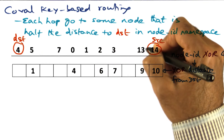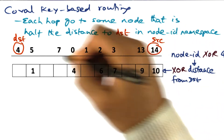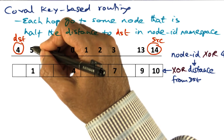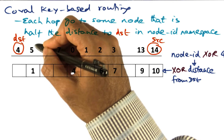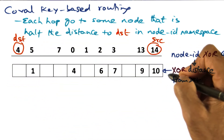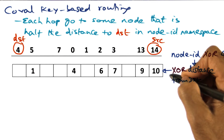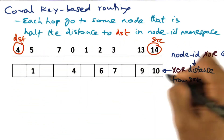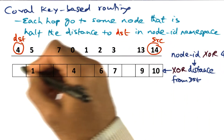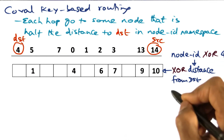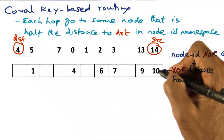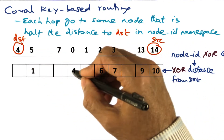The XOR distance from the node whose ID is 13 and the destination 4 is 9. Similarly, the XOR distance from the node whose ID is 5 and the destination 4 is 1. What I have now in my routing table is the XOR distance to the desired destination from each of the nodes I can directly reach.